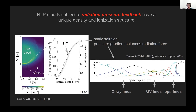What's special about this solution is that the surface layer spans a huge density gradient — a huge dynamical range in density. The density in the surface layer increases by a factor of 10^4 over a distance of less than a parsec. So there's a huge density gradient which develops on the surface of these radiation-pressure-dominated clouds, and this causes a huge range in the ionization level of the surface layer.